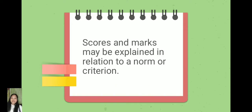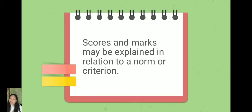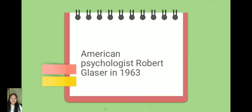Scores and marks may be explained in relation to a norm or criterion. The test score interpretation has two different types: norm referenced interpretation and criterion referenced interpretation. These references were conceived and differentiated by American psychologist Robert Glaser in 1963.